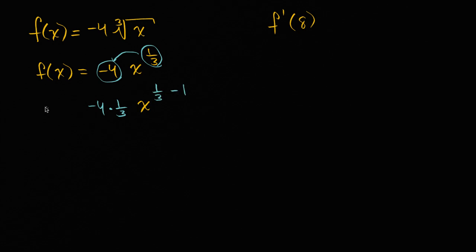This is the derivative. So f'(x) is equal to that. And so now we just have to simplify it. This is equal to -4/3 times x to the, 1/3 minus 1 is -2/3 power.